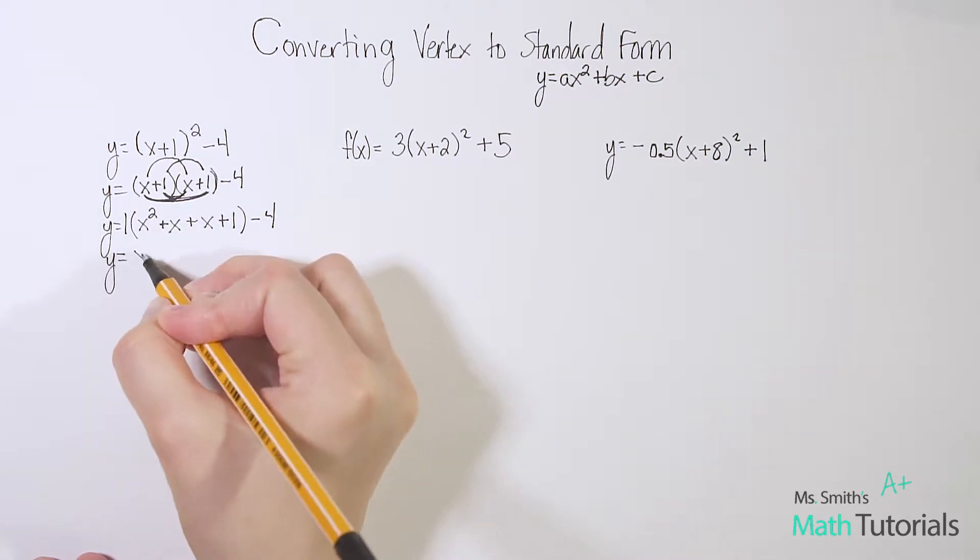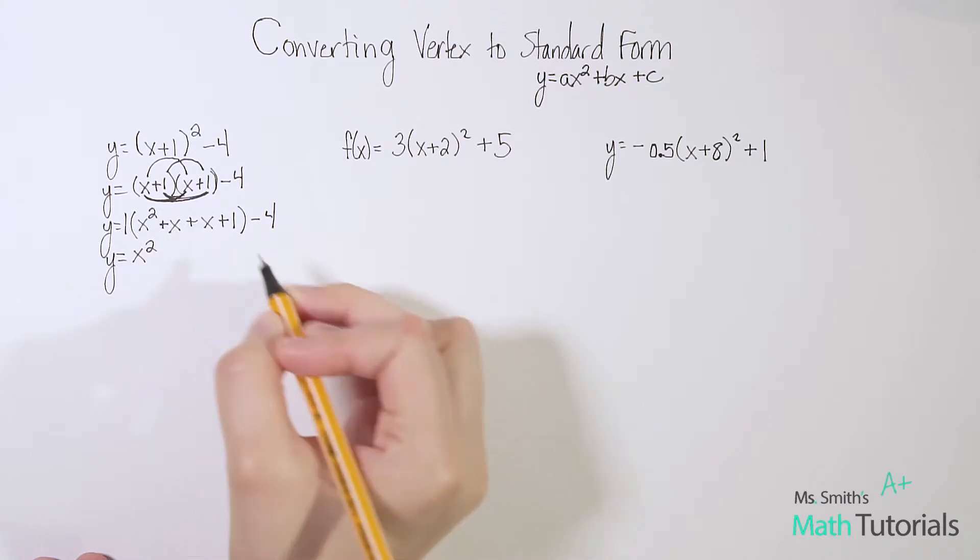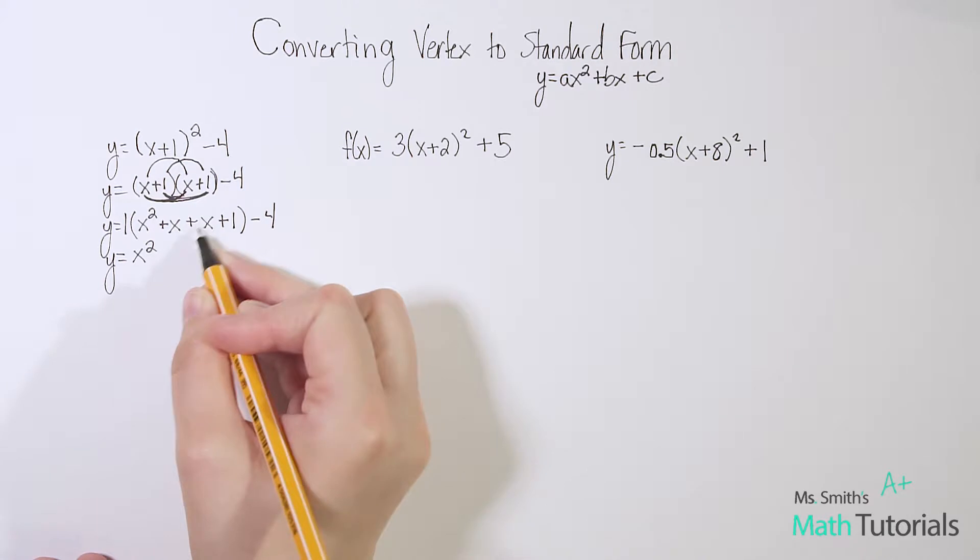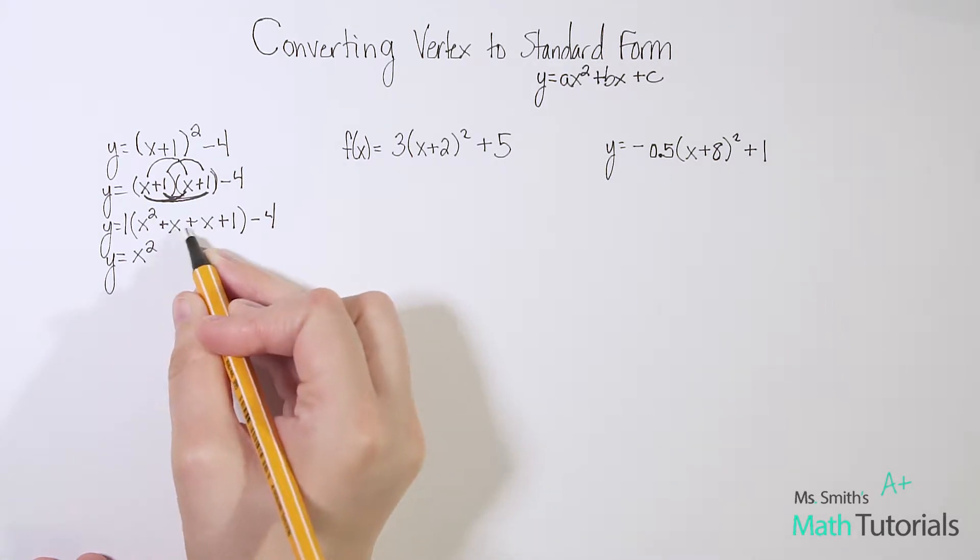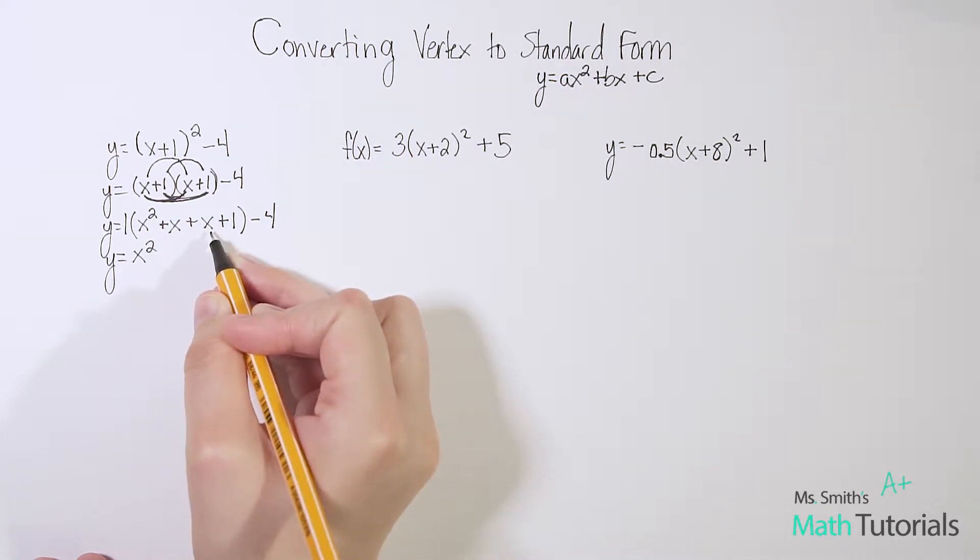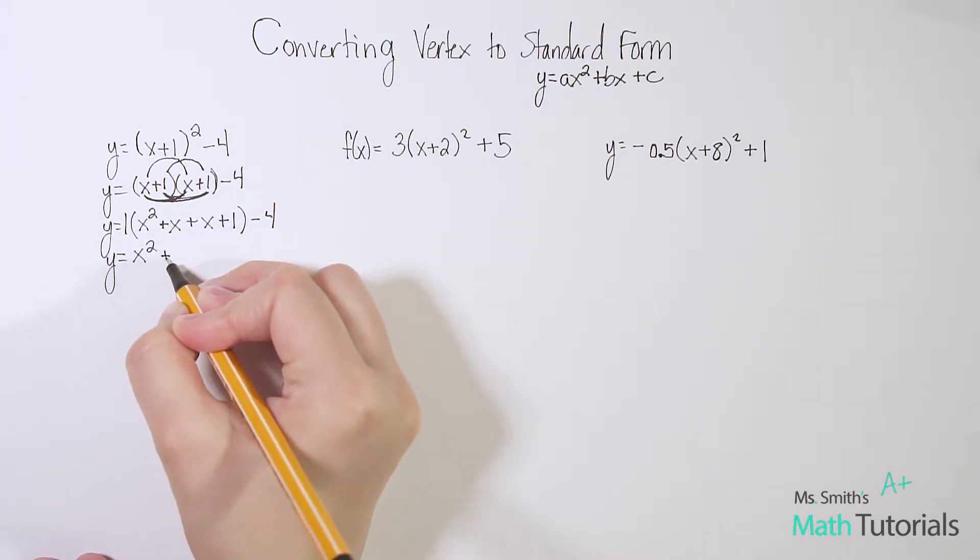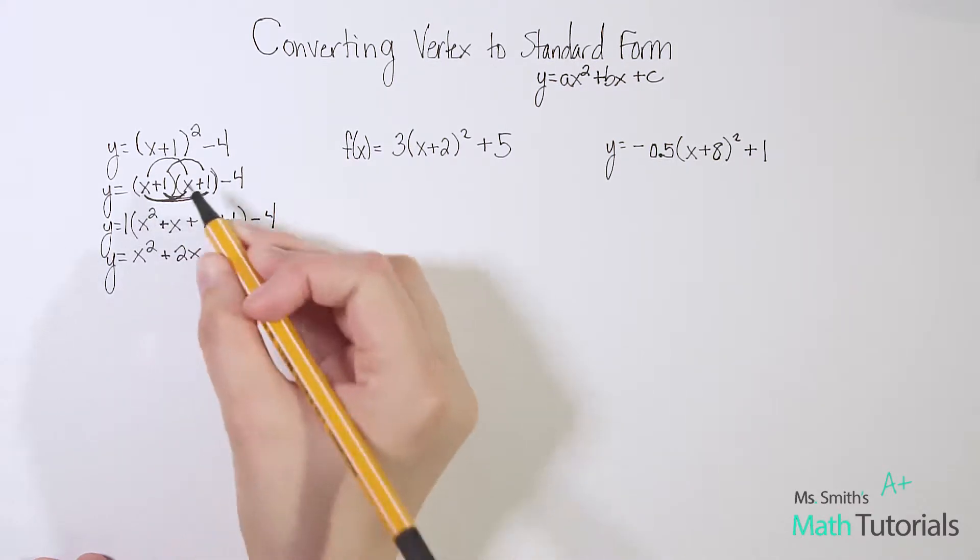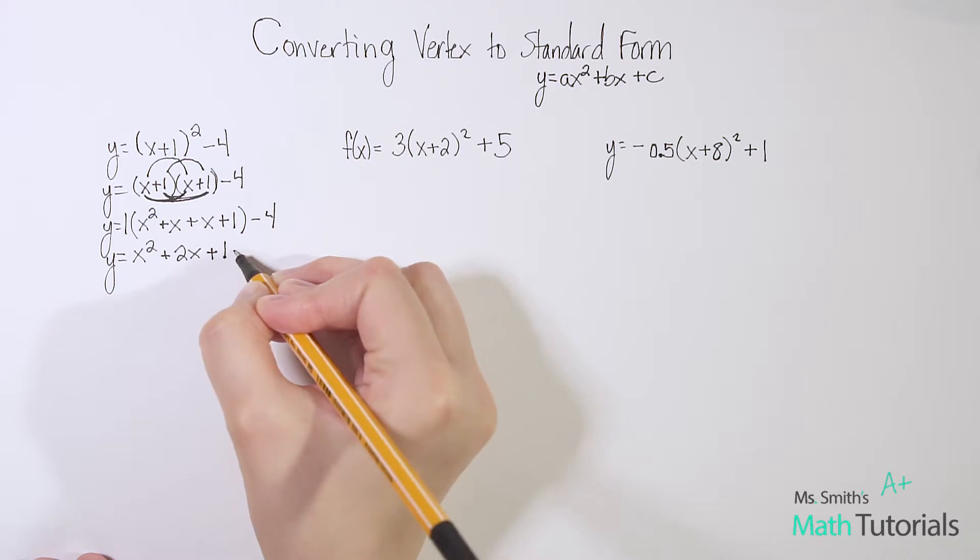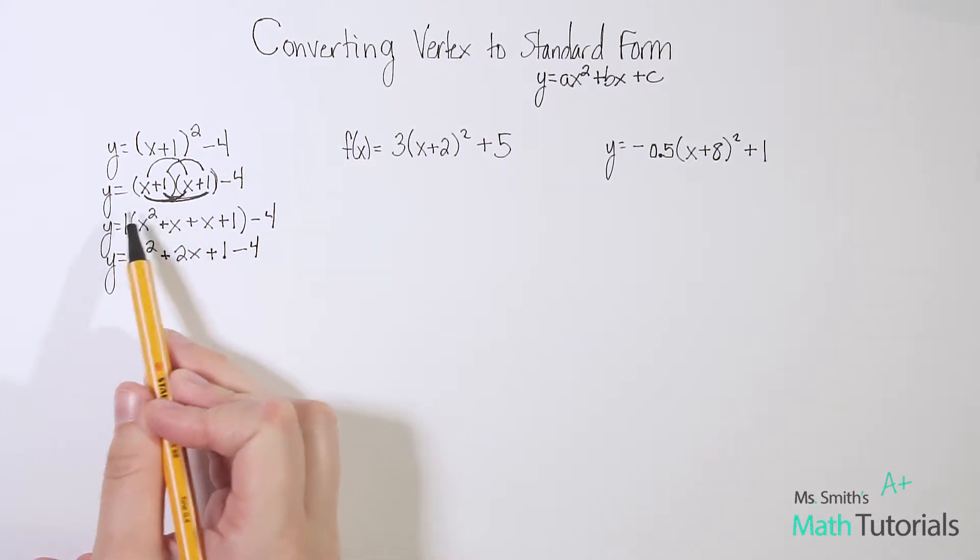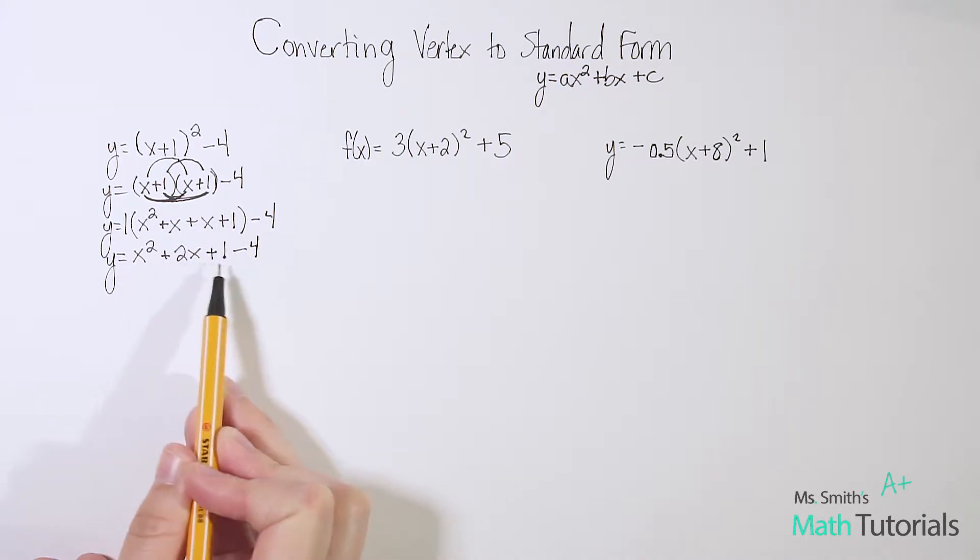In theory here, we are distributing the 1. I would just be left with x² plus, and I can go ahead and combine these like terms. We know that x + x is 2x, so it's +2x. Then positive 1 times positive 1 is just positive 1. And then I have my -4. By distributing that 1, the whole point was to get rid of the parentheses. Now notice my parentheses are gone.